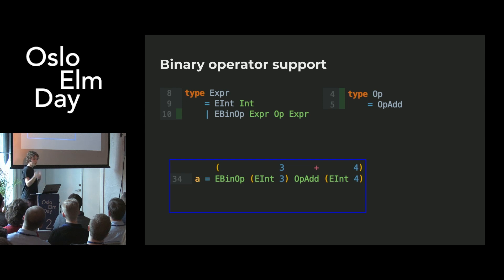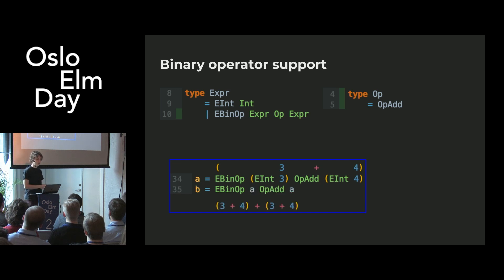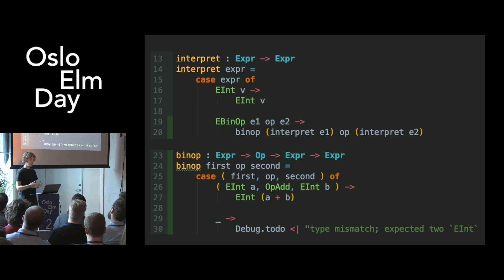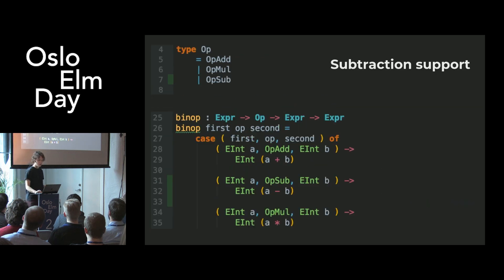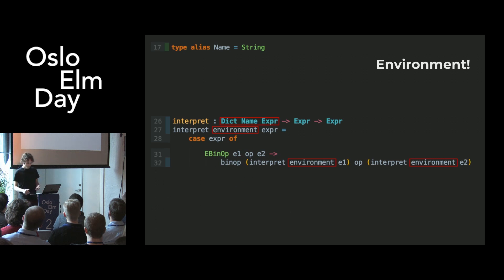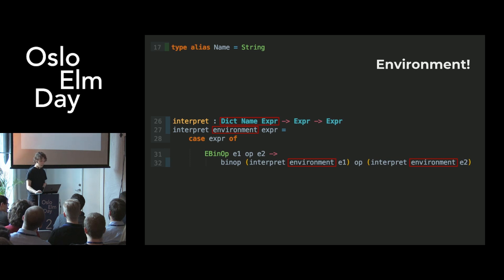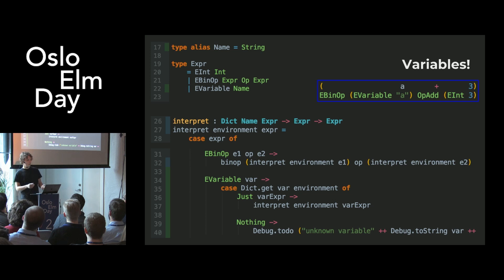Since it's just values and data structures, you can store them in variables like you're used to in Elm when building the AST. The implementation of evaluating a binary operator call is to simplify the two arguments and then look at the operand and just do what it says. Similarly, you can add support for multiplication and subtraction. For variables, we use a dictionary from variable name to the value of that expression, threading it through everywhere in the recursive calls. Then we need a way to do a lookup from the environment — dereferencing a variable.